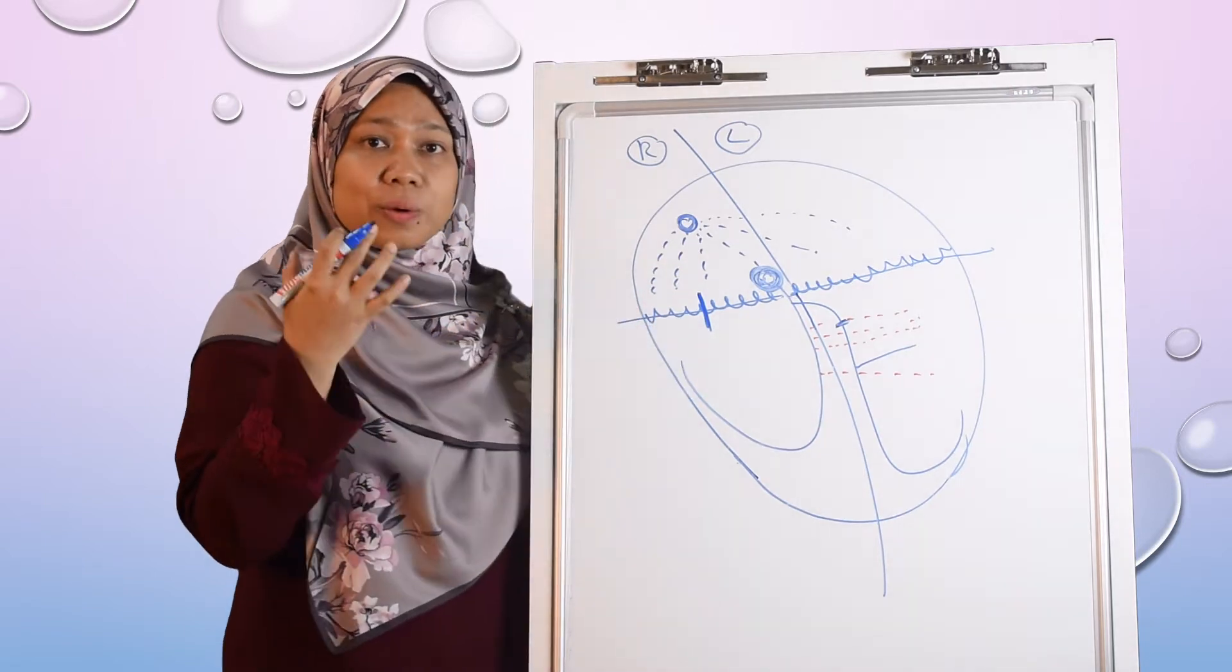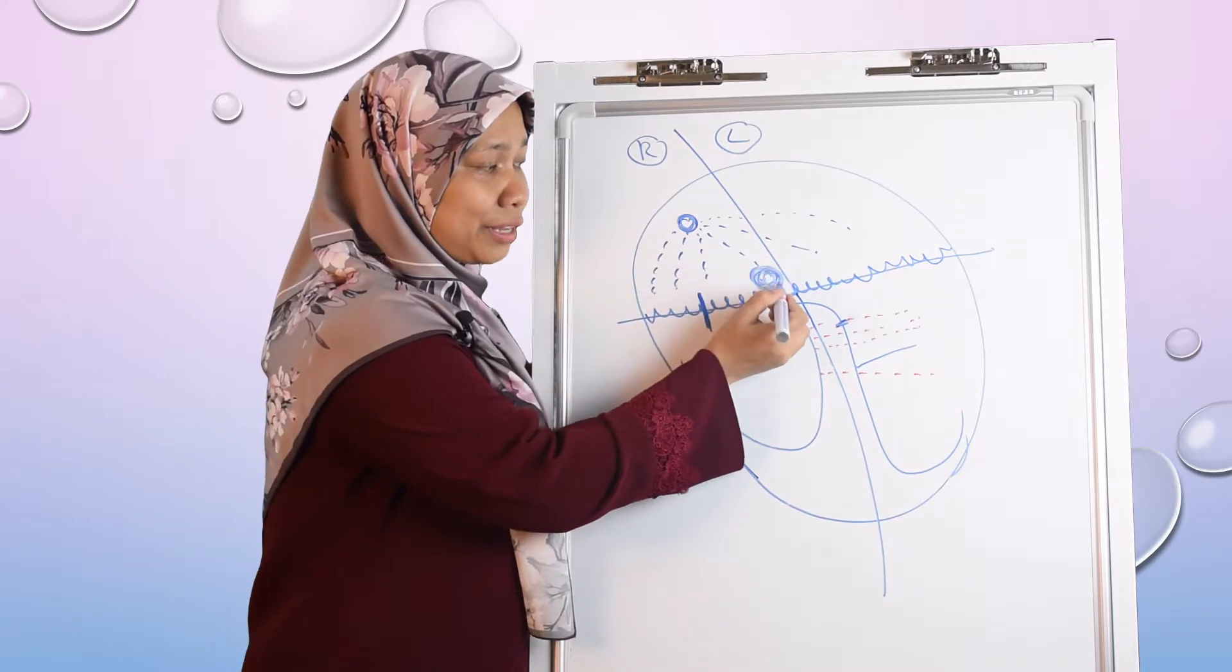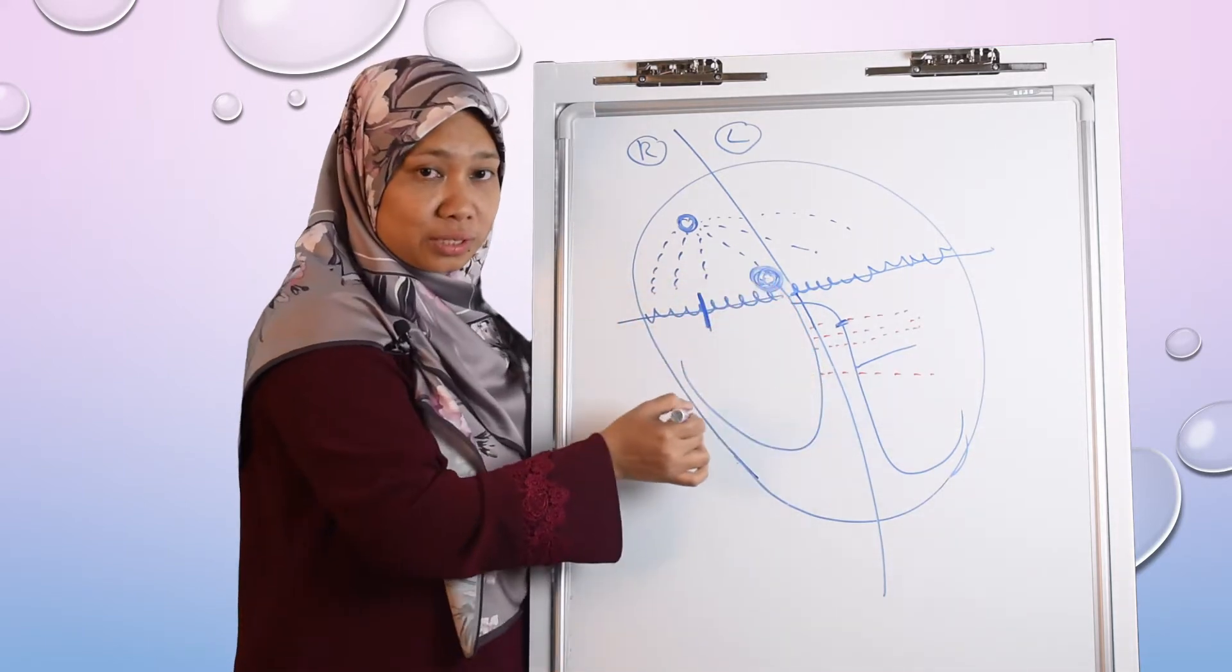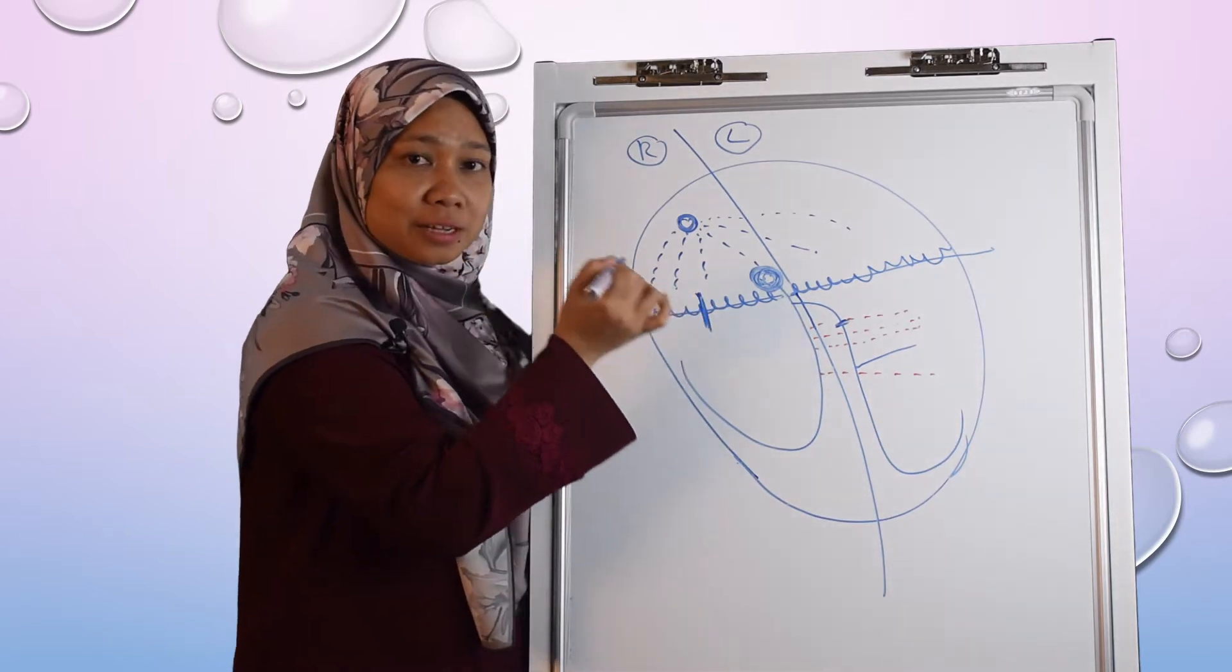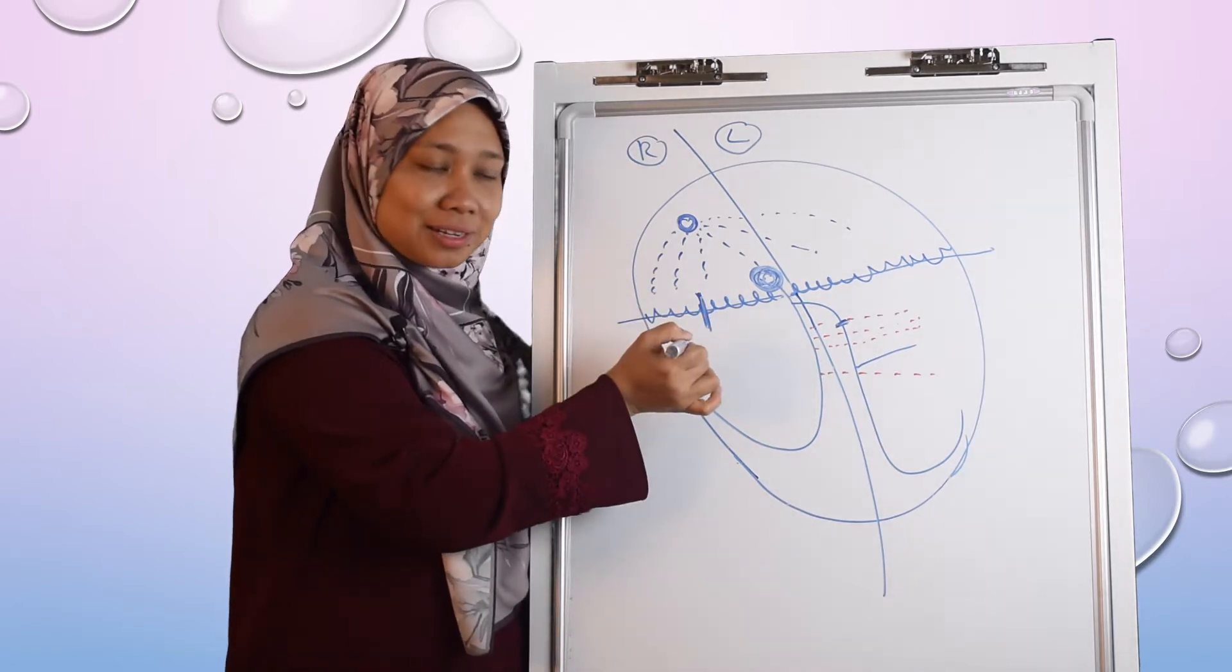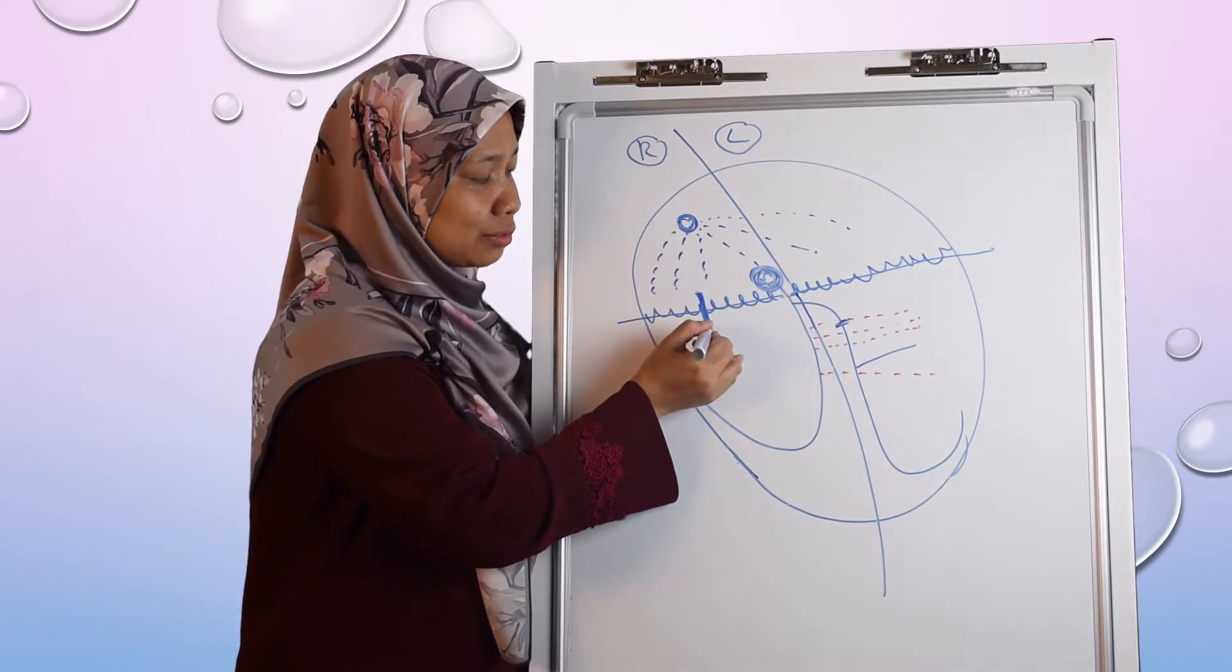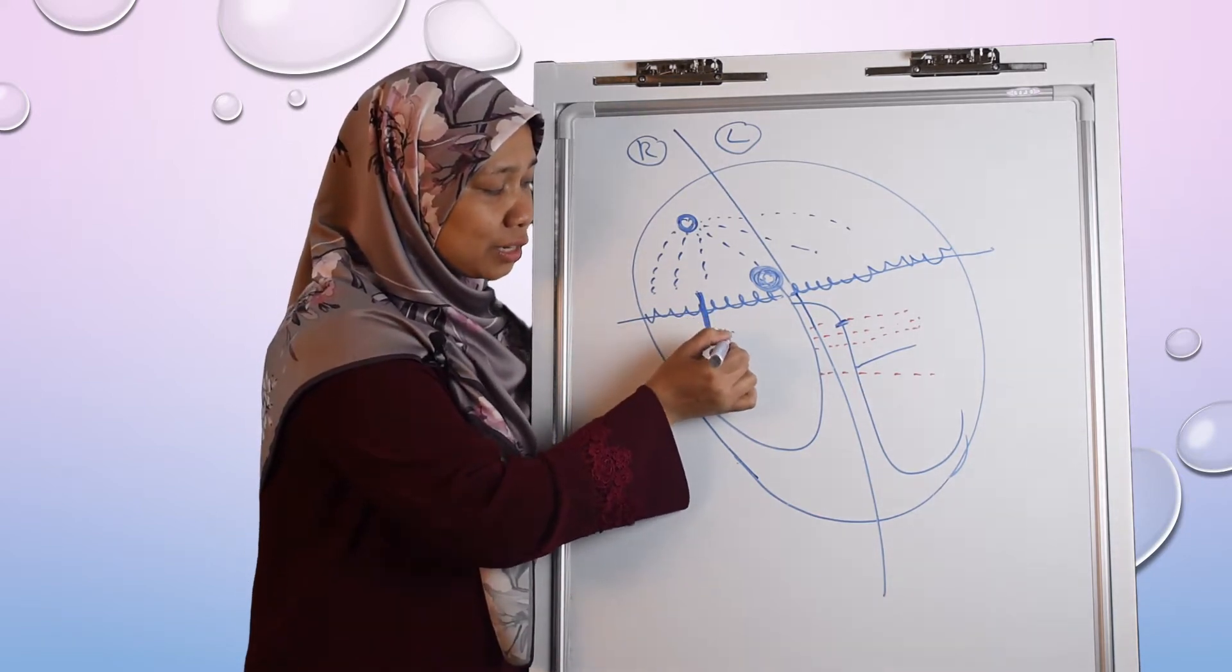So now what happens is, instead of the impulses waiting here at the AV node to travel to the ventricle, this accessory pathway provides a pathway for the impulse to go to the ventricle directly. So now the impulse is traveling here and this impulse will cause depolarization of the nearby muscles.